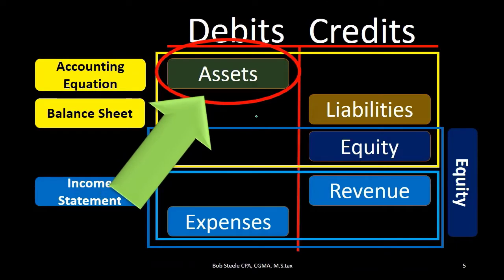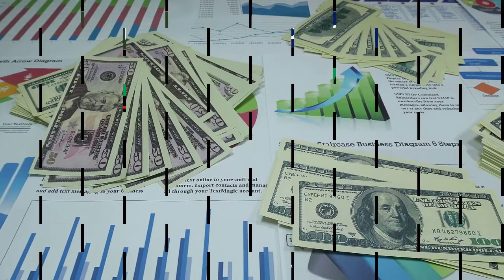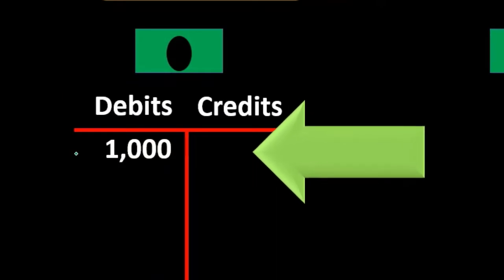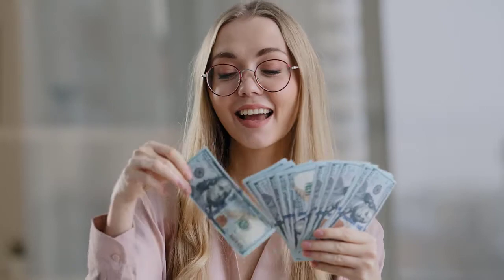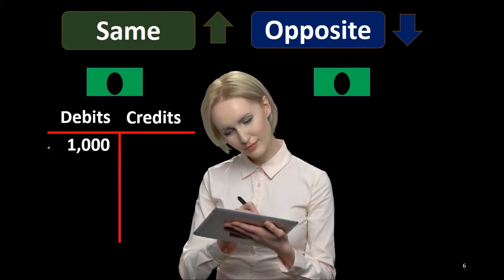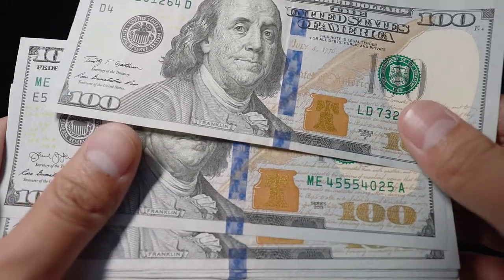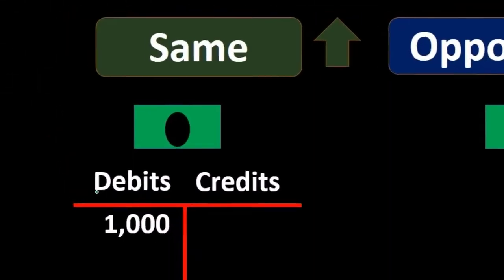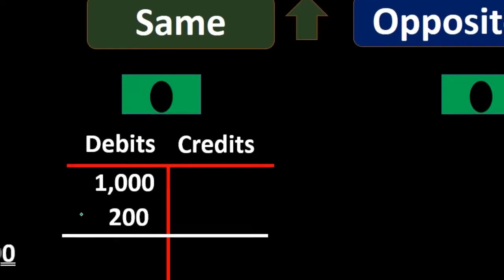We'll start with an example for assets — our most common asset being cash. We know that cash has a normal debit balance. We're going to start with an arbitrary debit balance of $1,000 already in the cash account. If we got more money — it doesn't matter how, perhaps from a client or from the owner — and we're just considering the cash account within a financial transaction, if cash is going up we do the same thing to it: another debit. So adding $200 increases the balance to $1,200.